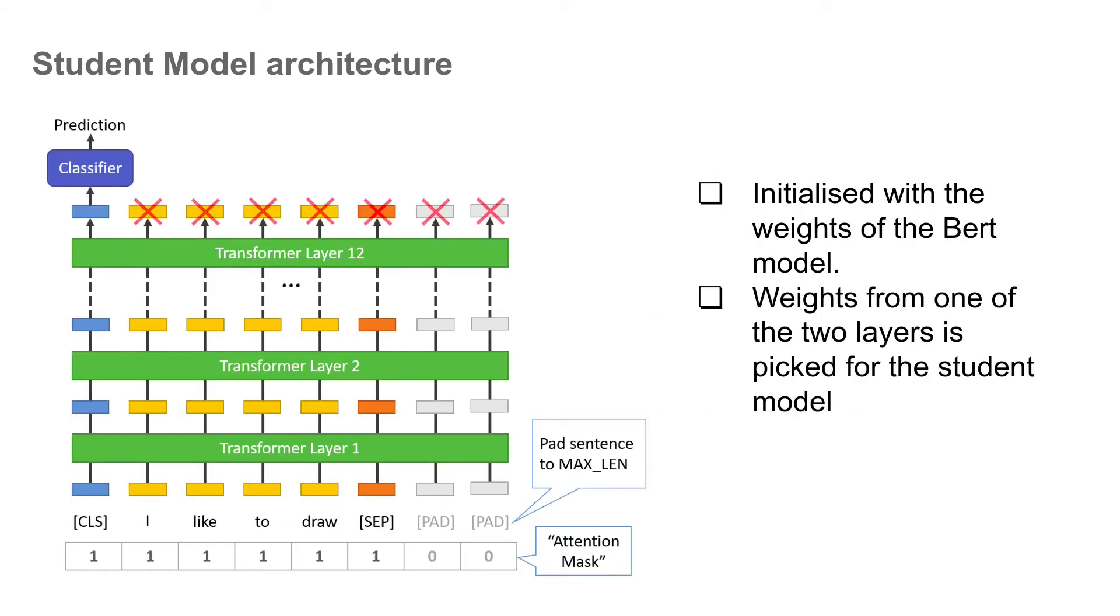Now how do we initialize the weights on the student model? Well, because the architecture is same as BERT, we can easily take the weights of the BERT model and use that here. Since we were reducing the number of layers by two for making the student model, we can pick one of the two layers from the original BERT and use those weights to initialize in the new student model.